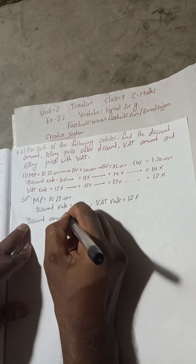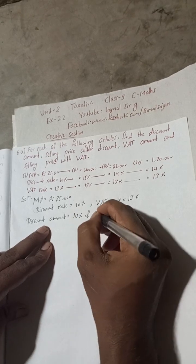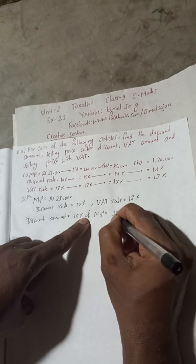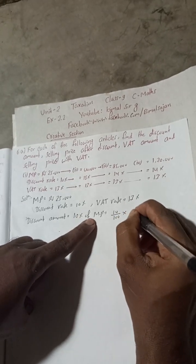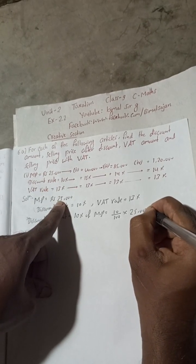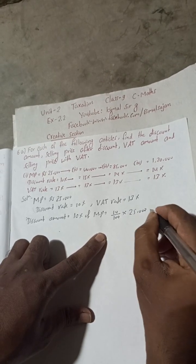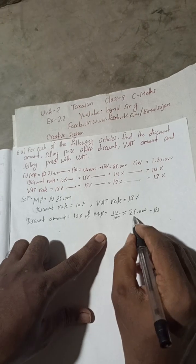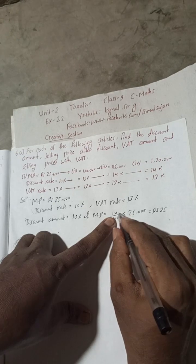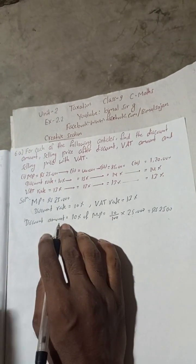Discount amount is equal to 10% of MP — 10% of marked price. So this is 10 divided by 100, multiplied by 25,000. Cancel the zeros: 25 multiplied by 1 gives 2,500. So Rs 2,500 is the discount amount.